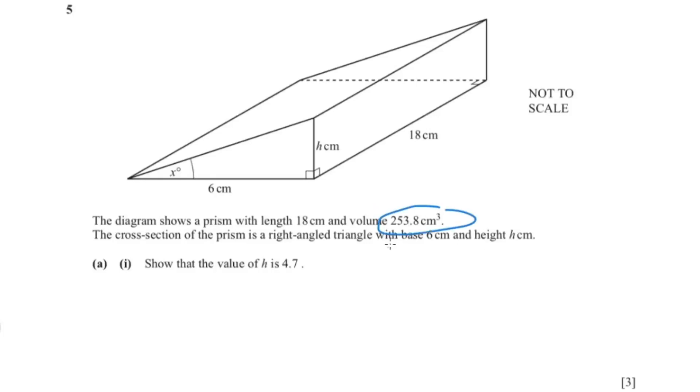This question has given us the volume and they're telling us to find the height. So we know that to calculate volume you'd have to multiply 6 and 18 and h and divide by 2, and that would give us 253.8.